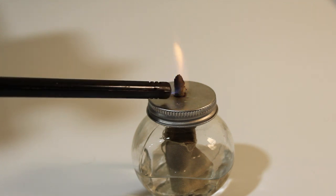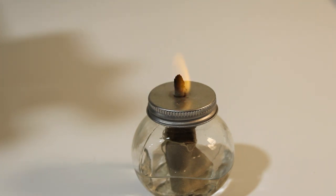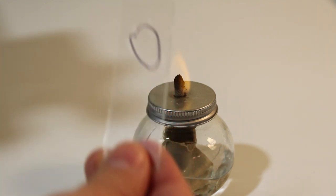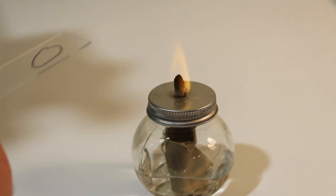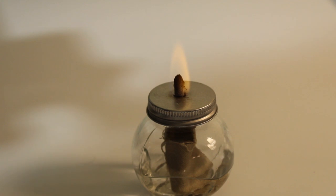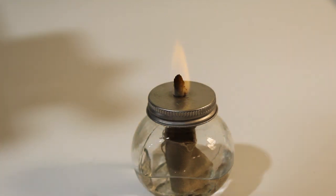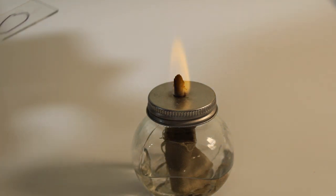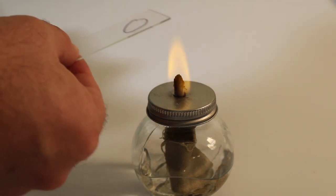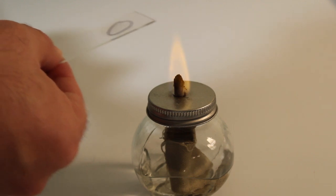So light your Bunsen burner or alcohol lamp, and then holding the slide as far away from your ring as possible, quickly pass it through the flame four to five times. When this is done, the slide should be hot to the touch, but not burning. For a Bunsen burner, you're only going to want to do this two to three times.